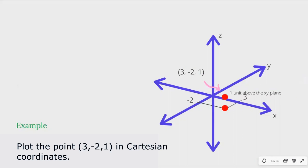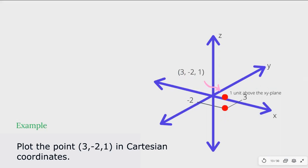We identify the x, y, and z coordinates on the x-axis, y-axis, and z-axis. As usual practice, labels of the axes indicate the positive sides. Again, 3 is the x-coordinate, −2 is the y-coordinate, and 1 is the z-coordinate. First, locate the point (3, −2) in the xy-plane as we've done before — so this is that point. Then lift that point one unit above the xy-plane as indicated by the z-coordinate 1. And now this is the visualization of the point (3, −2, 1) in 3D space.